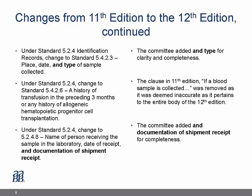Under 5.2.4 identification records, we made a change to 5.2.4.3, adding the phrase 'and type' for place, date, and type of sample collected, for clarity and completeness. Under 5.2.4.6, regarding history of transfusion in the preceding three months or any history of allogeneic hematopoietic progenitor cell transplantation, we removed the phrase 'if a blood sample is collected,' which was deemed to be inaccurate as it pertains to the whole body of the 12th edition.